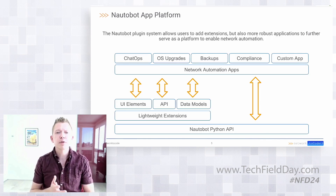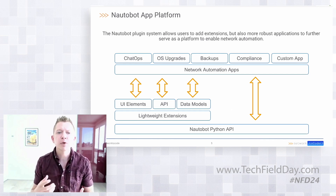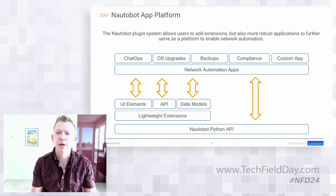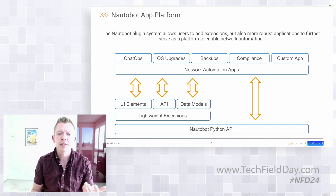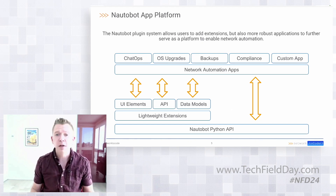Just a little dive into what we see as the app platform — this idea of being able to interact with the platform as needed depending on what our requirements are for the application we want to develop, whether lightweight or complex. We have the ability to use lightweight extensions or go all the way down to the API in Nautobot to really drive the power of automation.